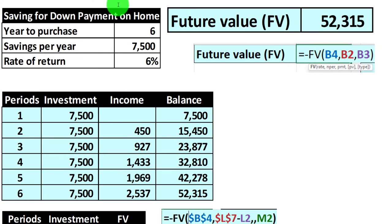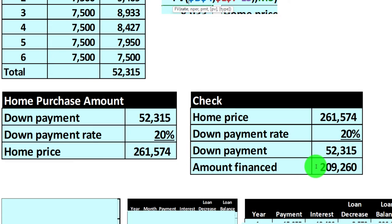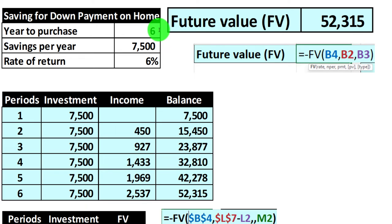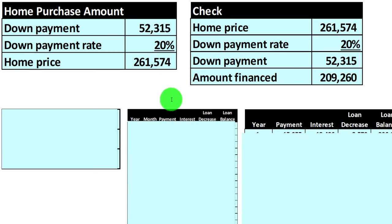Now if I set this up in Excel and just adjust the data up top, I can say: what if I put in $8,000? I can get the future value calculation to populate, see how much home I could purchase, how much financing is needed, and put together a nice Excel sheet to project out. I can change things like the number of years, the amount I'm saving, and the rate of return — and adjust those factors to see how much home I might be able to get after so many years.